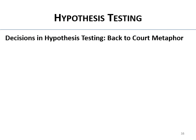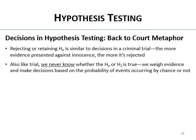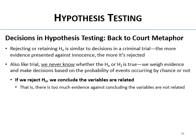Going back to the court metaphor: rejecting or retaining the null is similar to decisions in a criminal trial. The more evidence you present against innocence, the more likely it is to be rejected. Also like a trial, we never really know whether the null or alternative is true. We weigh the evidence and make decisions based on the probability of events occurring by chance. If we reject the null, we conclude the variables are related — that's what 'statistically significant' means.